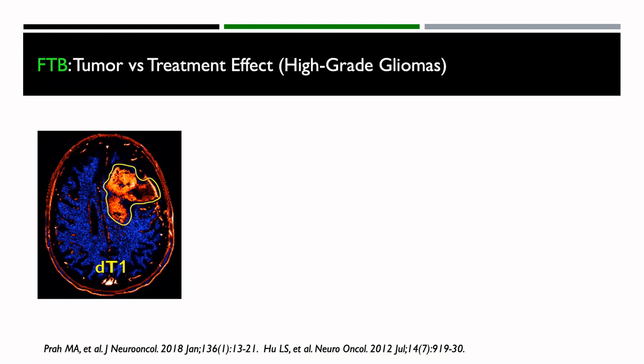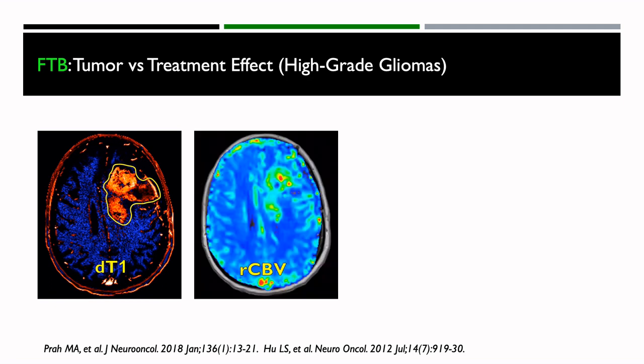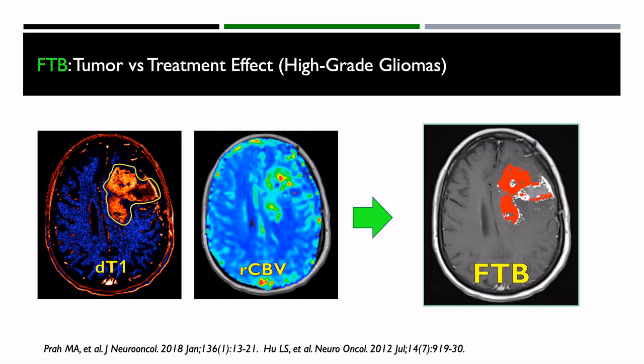Using this information, we can take our Delta T1 maps plus our RCBV maps, and within the Delta T1 region, look at the threshold of RCBV and create what we call fractional tumor burden maps. This tells us within the area of enhancement which areas are tumor — shown in red — and which areas are treatment effect — shown in white.